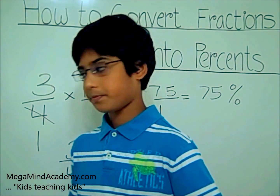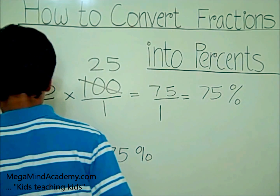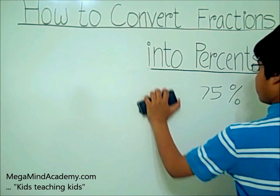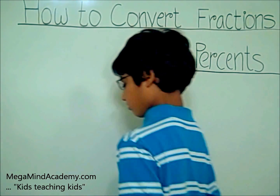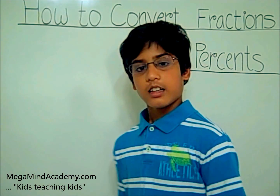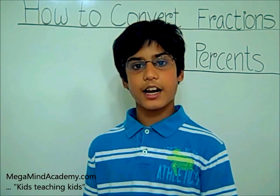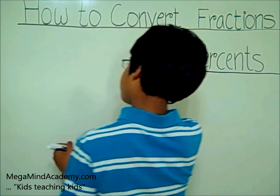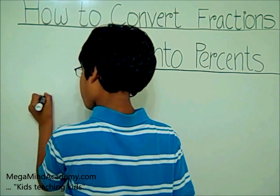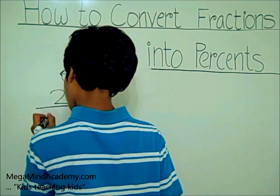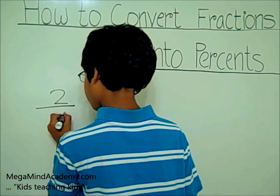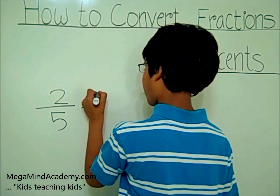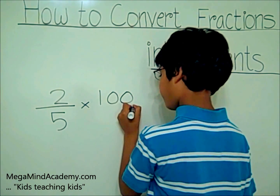Let's look at another example. This time, let's say our fraction is two-fifths. We have to multiply it by a hundred out of one.